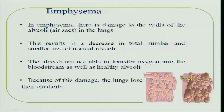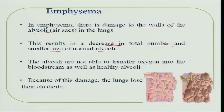In emphysema, there is damage to the walls of the alveoli, or air sacs, in the lungs. Two or three air sacs merge together, forming a large opening and decreasing the total number of smaller normal alveoli. Since alveoli transfer oxygen to the blood via adjacent blood vessels, when the number of alveoli decreases, oxygen transfer to the blood also decreases. Additionally, because of this damage, the lungs lose their elasticity, become hardened, and less air can enter.